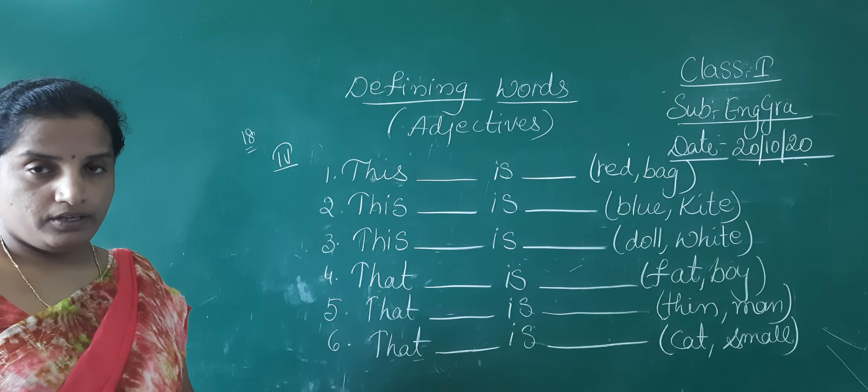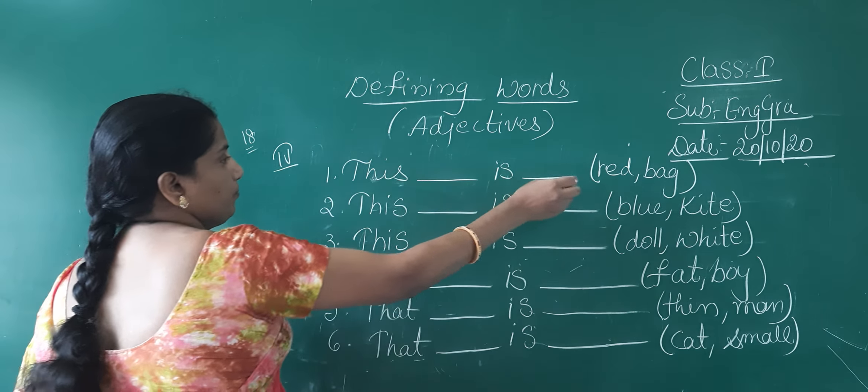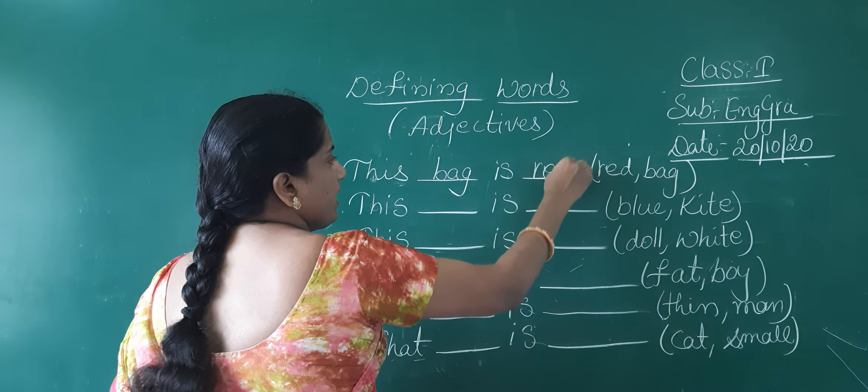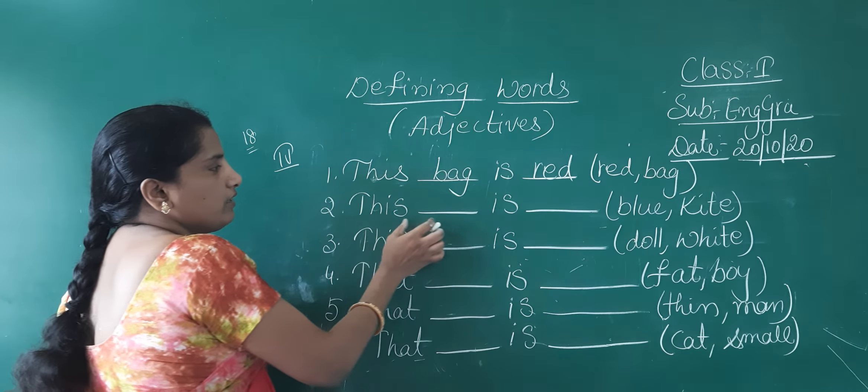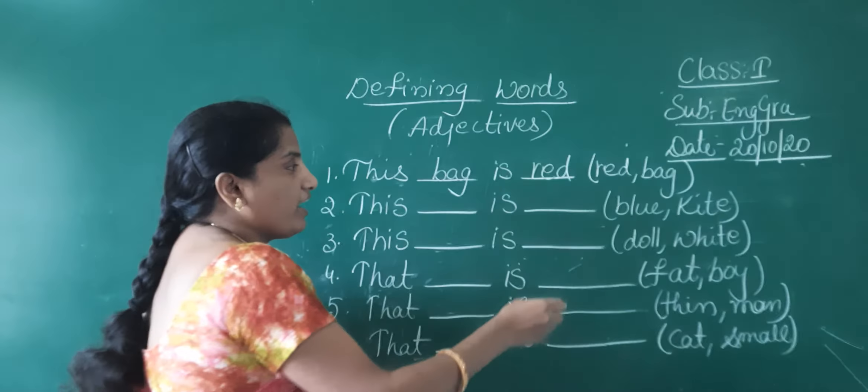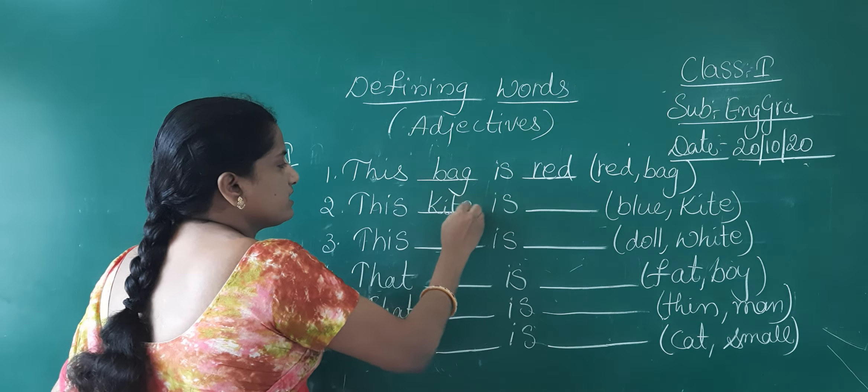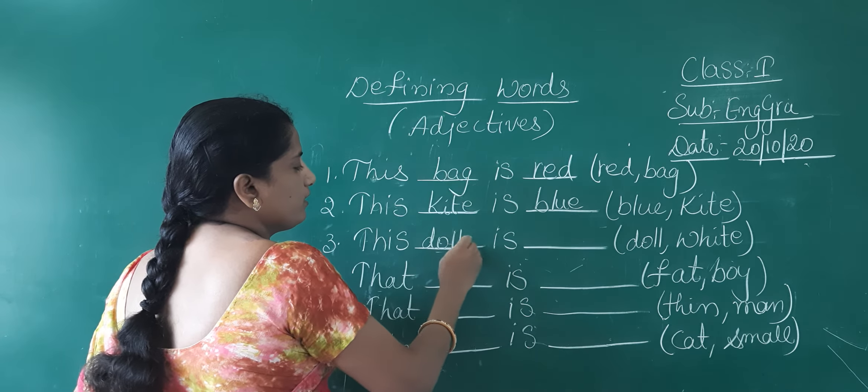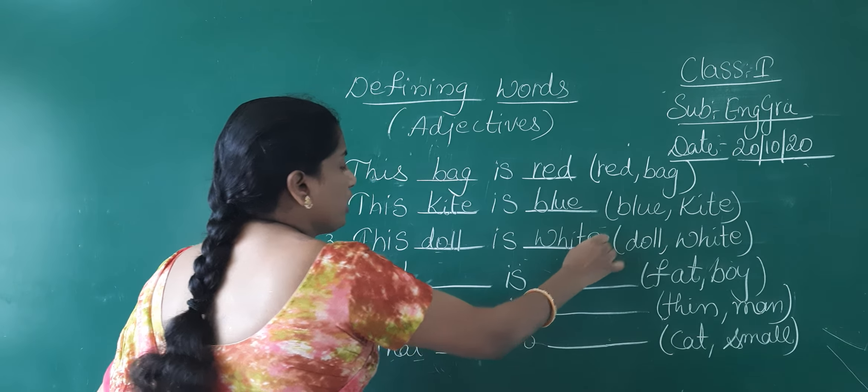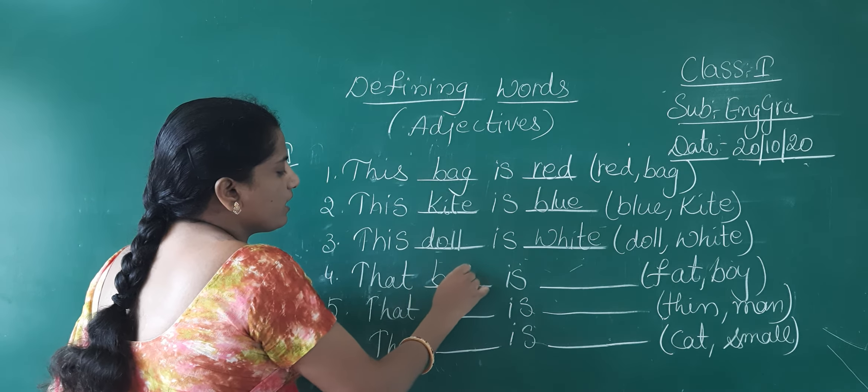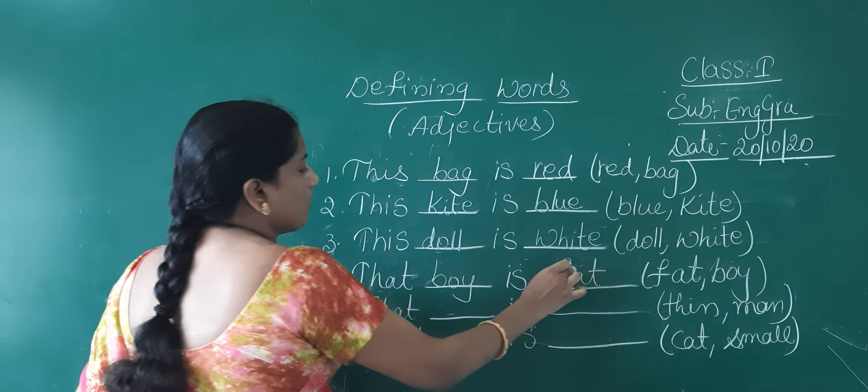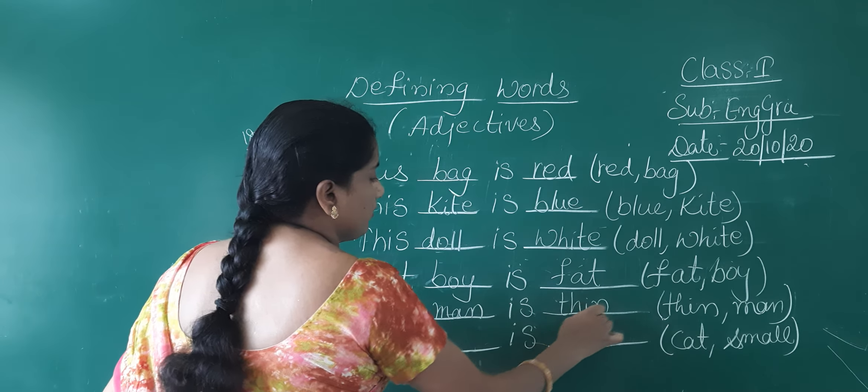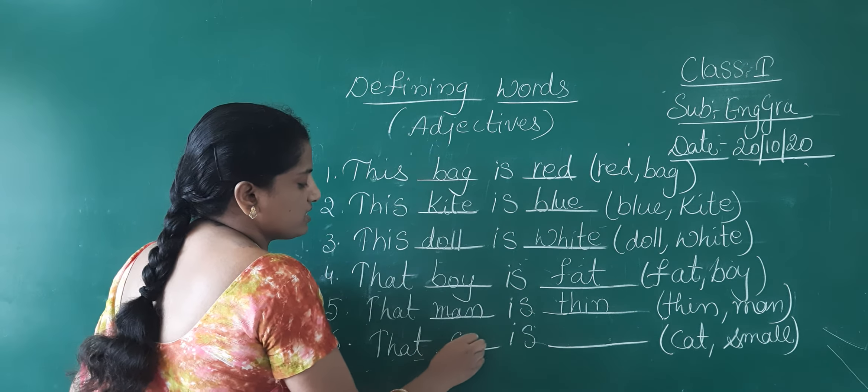Now, look at the book. This bag is. This bag is red. This bag is red. Coming to the next one, we can't say this blue is kite. We have to say this kite is blue. This kite is blue. Next one, this doll is white. This doll is white. That boy is fat. That boy is fat. That man is thin. Next one, that cat is small. That cat is small.